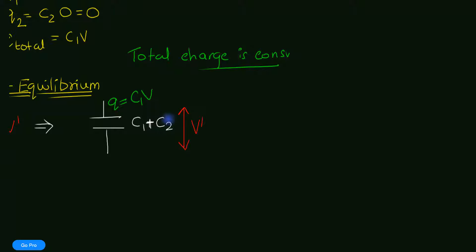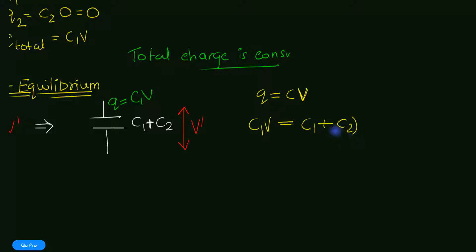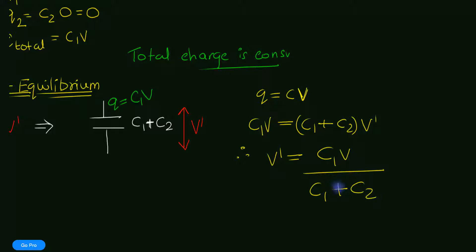Because total charge is conserved, the charge Q has to be the same as C1 times V. We can use the capacitor equation Q equals C times V. So the total charge C1 times V should equal the total capacitance, that is C1 plus C2, times V dash. Therefore we now know what V dash is: that's C1·V divided by C1 plus C2. And that's what we wanted.